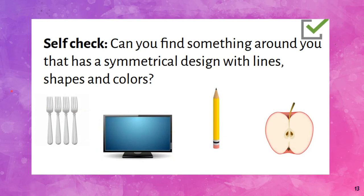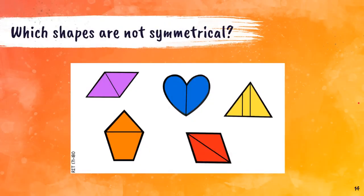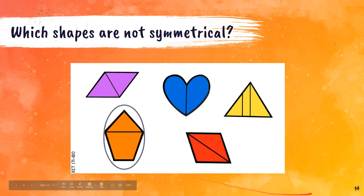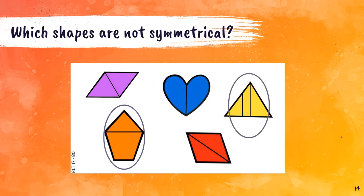Now, can you find something around you that has a symmetrical design? Something that you could draw a line down the middle of and it would be the same on both sides. Can you go find something? You can pause the video if you need to. All right, so let's look at these examples. Which shapes are not symmetrical — meaning you could not fold them in half and they would be the same? This orange one and the yellow one.